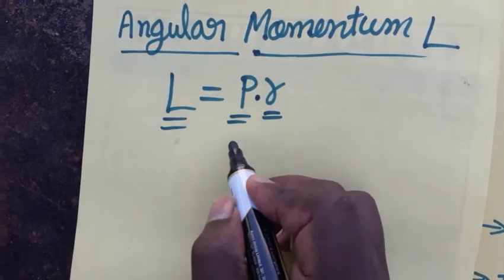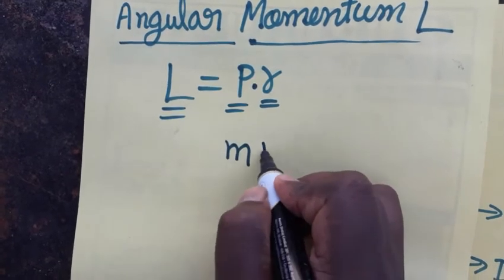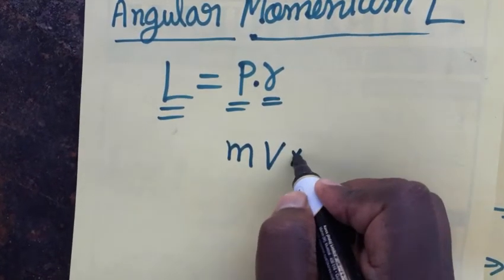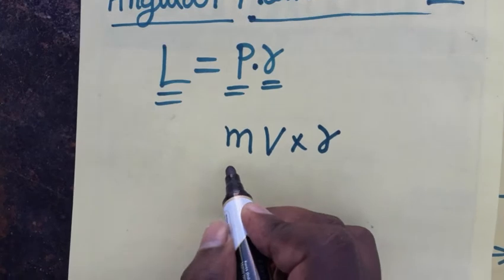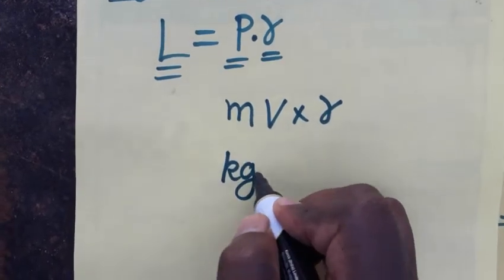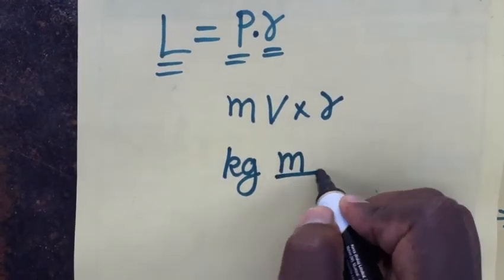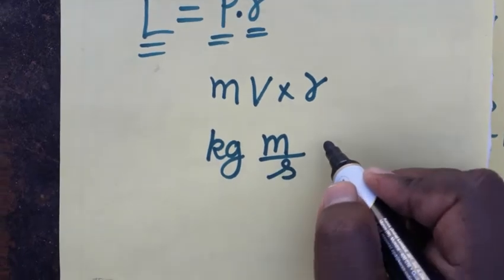So linear momentum is mass into velocity into radius. Mass will be kg, velocity will be meter by second, that means displacement by time.